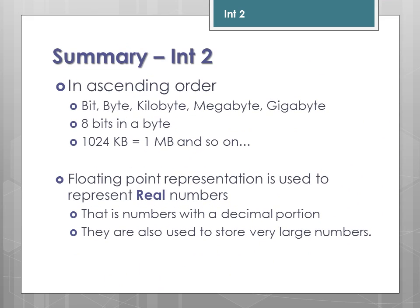To summarise for INT2, in ascending order you need to be able to recite bit up to gigabyte and know which are smaller and which are larger. Remember that 8 bits make a byte, and after that to the next level up there's always 1,024. If you convert to a larger unit such as megabyte, you get fewer — so you're looking at division. If you're going from megabyte to kilobyte, i.e. getting smaller, you're looking to have more, so you use multiplication. Floating point representation is used to represent real numbers — numbers with a decimal portion — and they're also used to store very large numbers.